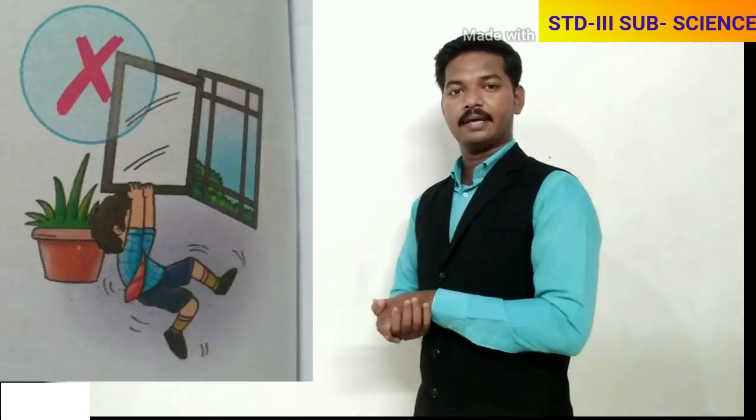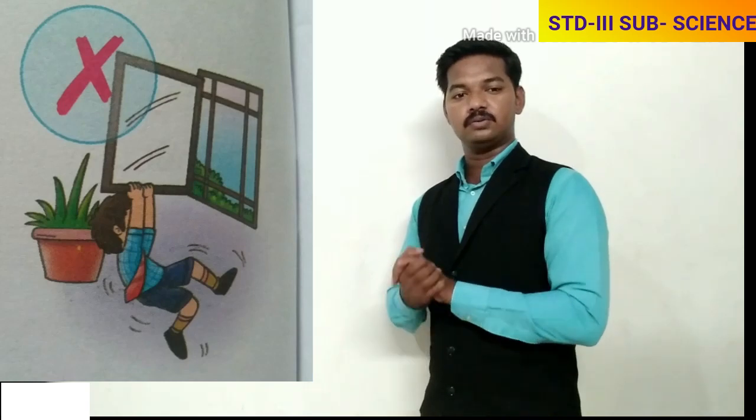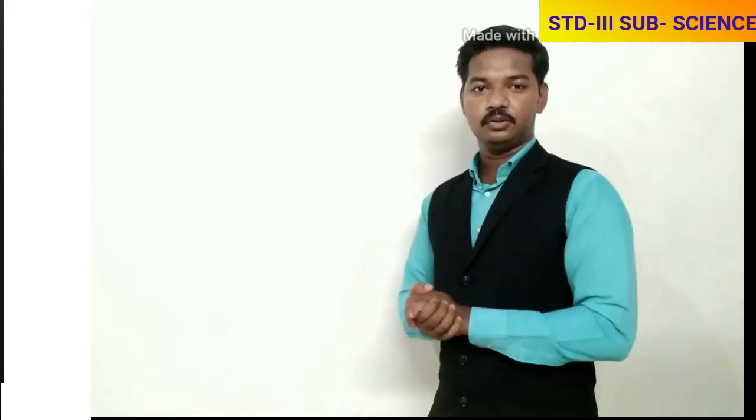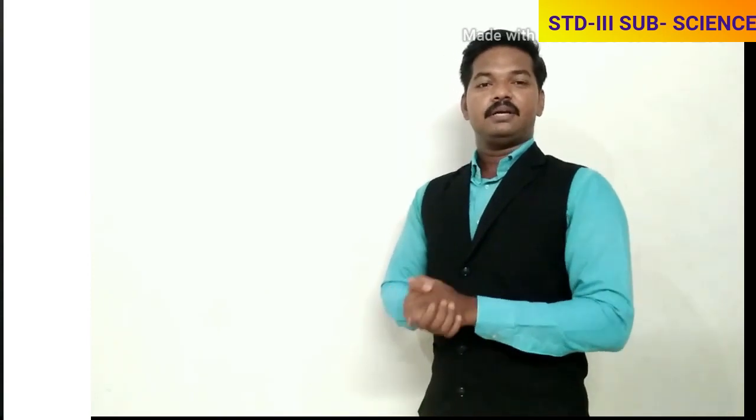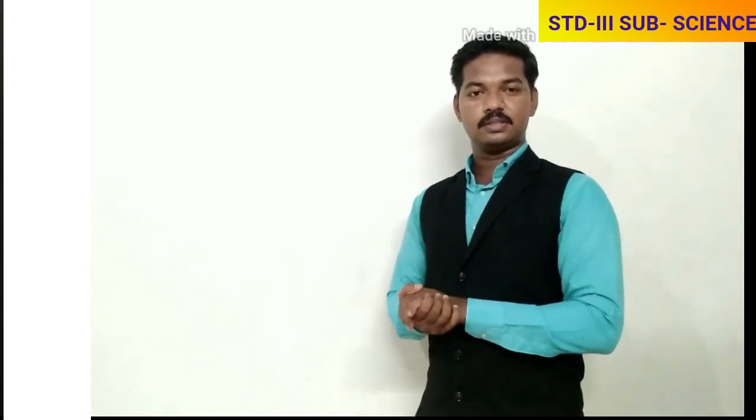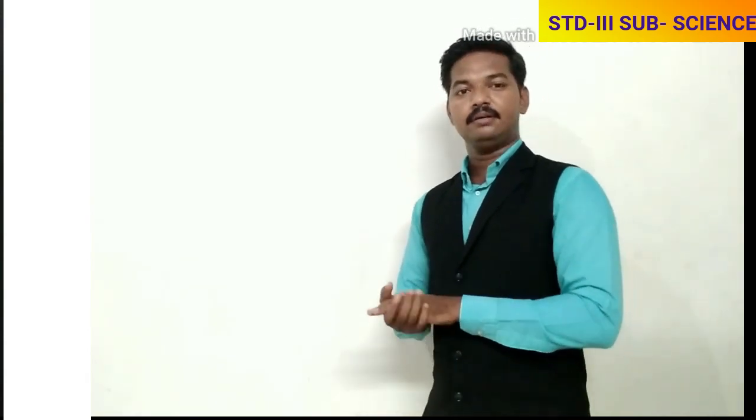Number five: do not hang or swing on windows. If the glass breaks, it may hurt you. Okay, so these are all safety manners you have to follow when you are in the classroom. So what we have learned today: we have to follow some safety rules when we are at home, as well as some safety rules when we are in the classroom.